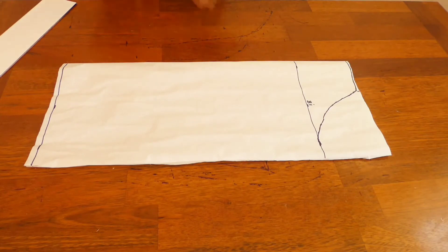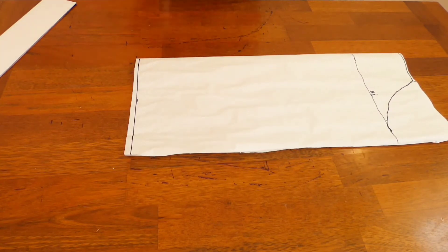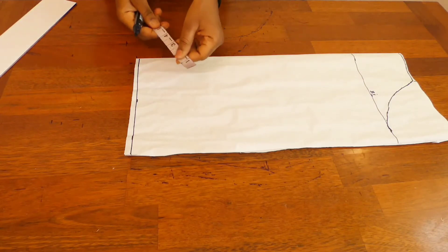So the next thing we have to do right now is to measure the wrist. Since we are just drafting the basic bodice patterns for a long sleeve, all you just need to mark right now is the wrist, the wrist width. The wrist of this person is eight inches, so we're going to be dividing eight inches by two.